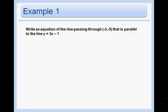So the first example asks us to write an equation of the line passing through negative 3, negative 5. So we know a point that is parallel to this line. Parallel, remember, just means that the slopes are the same. So I know my slope should be 3. That's all I know because it said it's parallel to this line. So all I know is that my slope should be 3 and it should pass through this point.